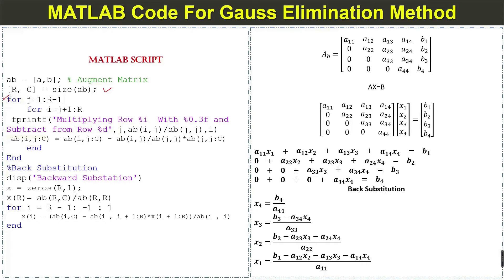We use two for loops — one for column and one for row. We then use the fprintf command to show by which number we are multiplying a given row, and then subtract from the other equation. This fprintf command will display the pivot row multiplier. Next we have the Gauss elimination forward elimination procedure, and then we end both for loops.